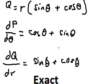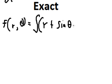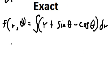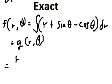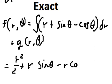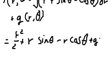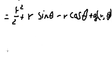We set up the function F. Integrating, we get R squared over 2 plus R sin(θ) minus R cos(θ), and we also have a term 3R·g(θ) to account for.